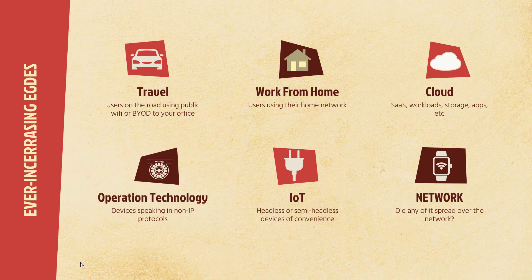There's your operational technology — your OT and ICS. These are things in your network that don't speak IP protocols; could be anything from an industrial facility to an old temperature sensor in a college cafeteria. There's your IoT, which is your headless or semi-headless devices like the coffee maker. And of course there's the question of the network as a whole — did any of it spread over the network?